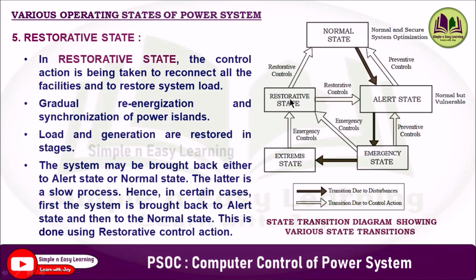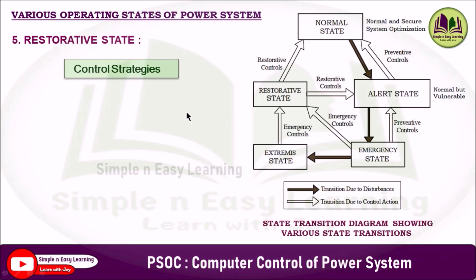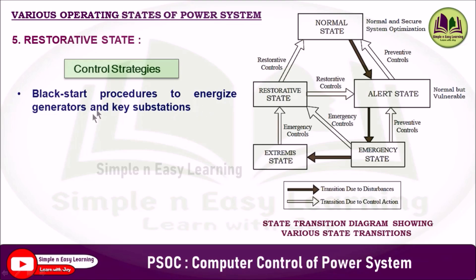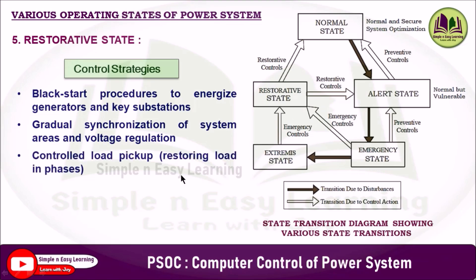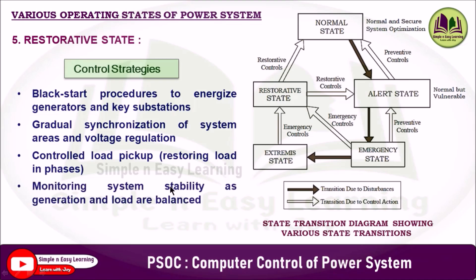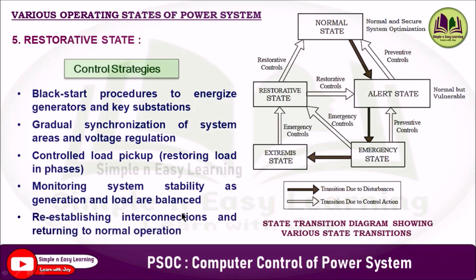Control strategies in the restorative state include black start procedures to energize generators and key substations, gradual synchronization of system areas, voltage regulation, controlled load pickup (restoring load in phases), monitoring system stability as generation and load are balanced, re-establishing interconnections, and returning to normal operation.